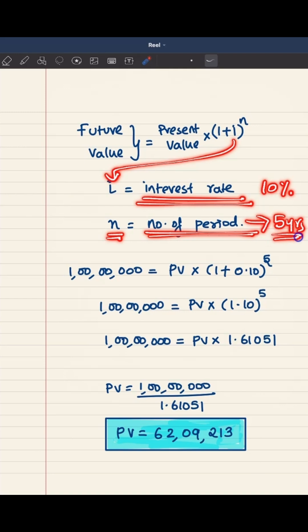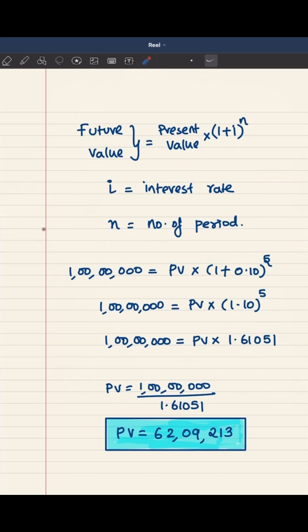So you have two information on the right-hand side, and on the left-hand side you have future value. And what is the future value? Here the future value is 1 crore, which is received at the end of 5th year. Let's plug all this in the formula.